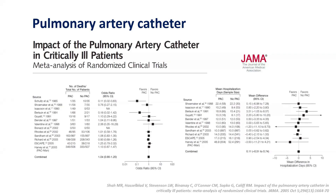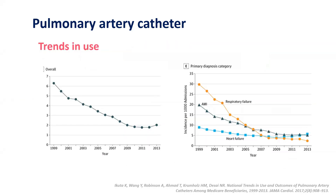Subsequently, meta-analyses showed that there was no significant impact of the pulmonary artery catheter in critically ill patients in terms of mean hospitalization or mortality. As one can understand, over the last two decades the use of the pulmonary artery catheter has reduced irrespective of the indication.